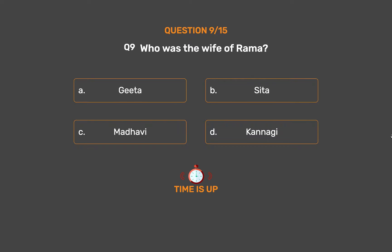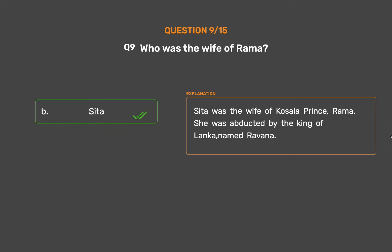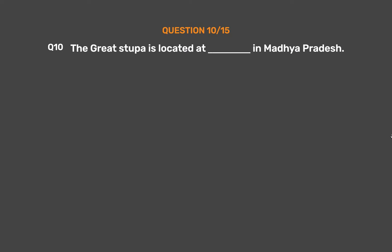The correct answer is Option B: Sita. Sita was the wife of Kosala prince Rama. She was abducted by the king of Lanka, named Ravana.